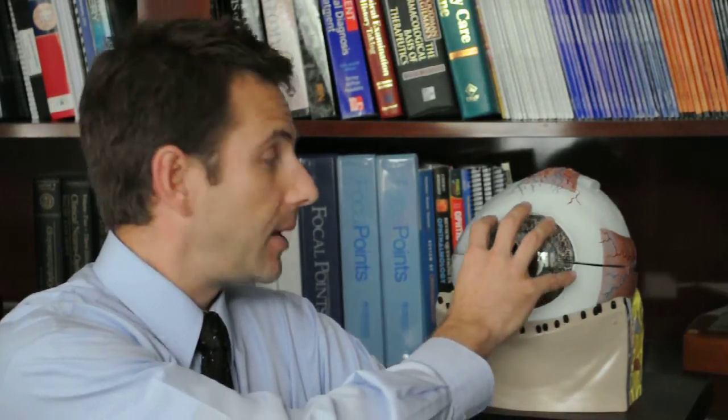So remember, the cornea is the clear shield that covers over the front of the eye. And if you remember from one of our previous episodes where we covered keratoconus, keratoconus is when the cornea progressively bulges forward into a cone shape and becomes thin, particularly in the center.